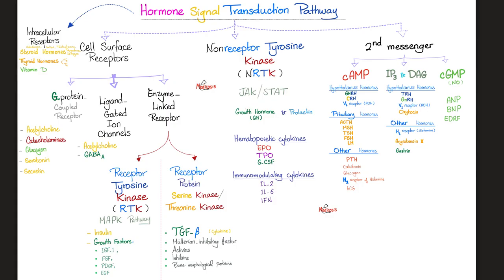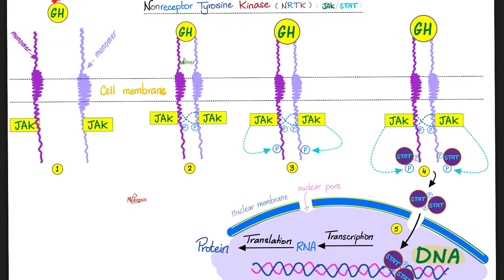The JAK-STAT pathway, also known as non-receptor tyrosine kinase: ligands include growth hormone, prolactin, erythropoietin, and thrombopoietin. The ligand binds the receptor, causing two monomers to dimerize. This receptor does not have intrinsic tyrosine kinase activity — it is dependent on JAK. JAK activates the other JAK; they autophosphorylate each other and then phosphorylate STAT proteins. The two STATs dimerize and enter the nucleus, driving transcription and translation.